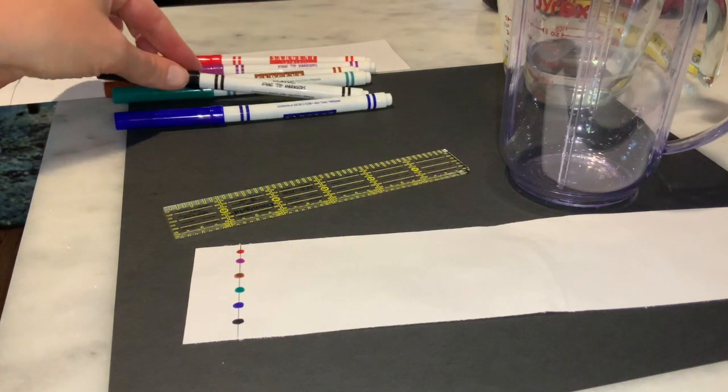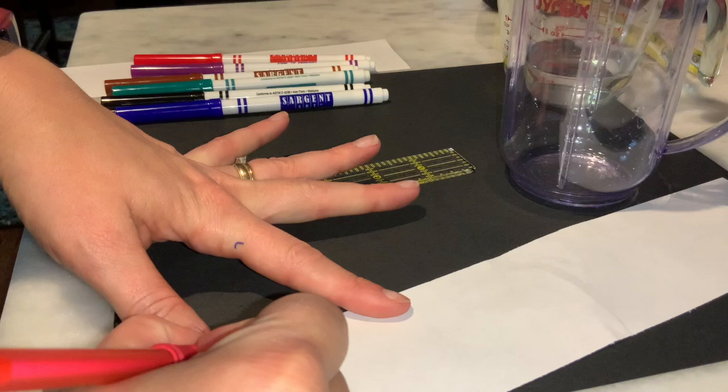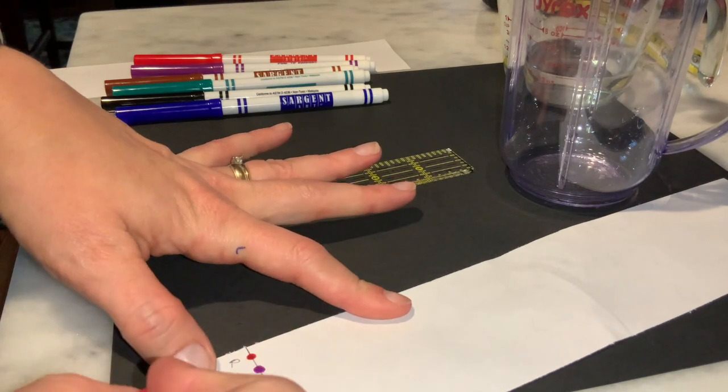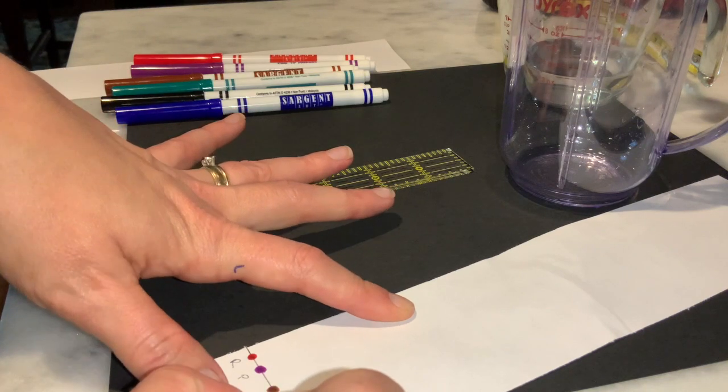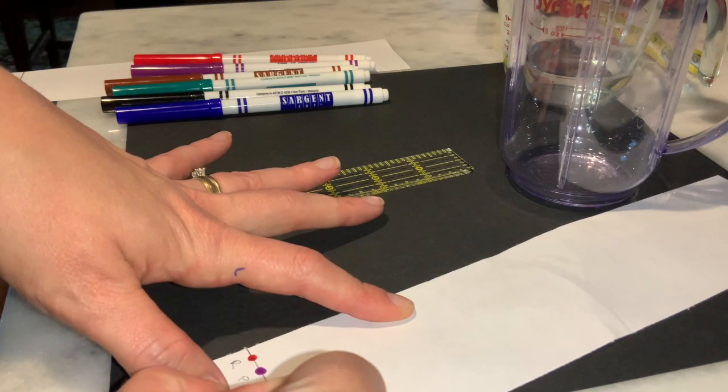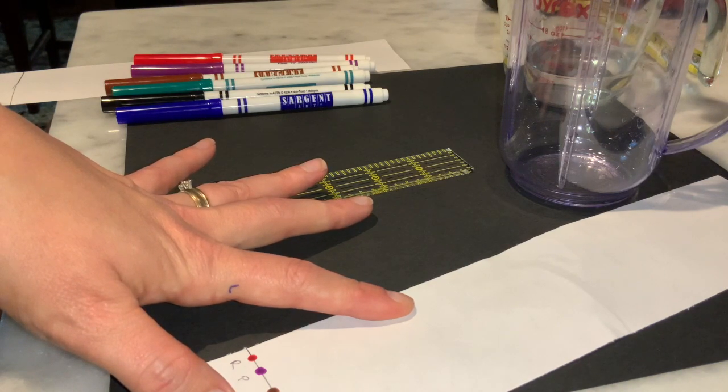Now we want to make sure that we label our samples and we're going to do that in pencil. So I'm going to go in and put an abbreviation. I'm going to do R for red, P for purple, BR for brown, green, blue, and black.